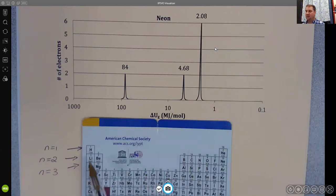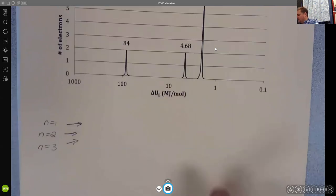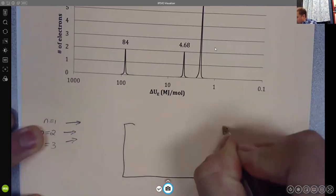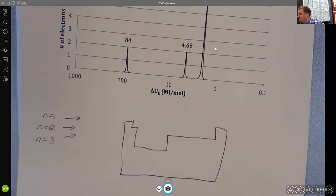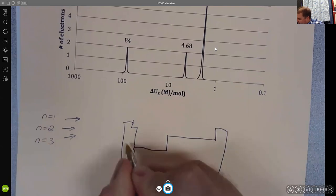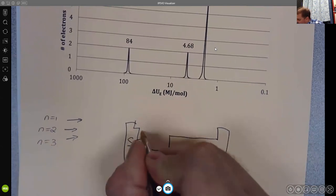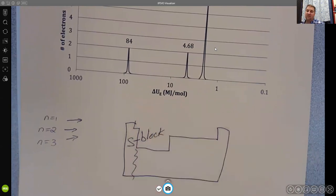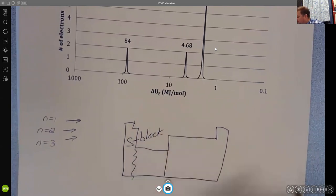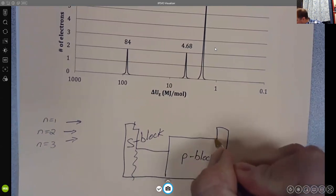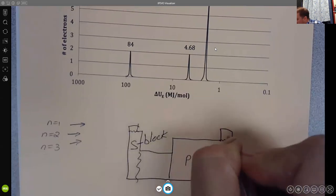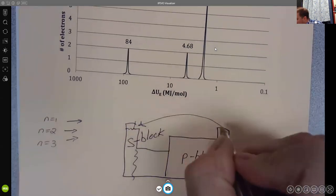And so the second shell for neon has these two electrons here, along with these six electrons here. And what chemists have called this, if I just do a super quick sketch of the periodic table, is this section here is called the S block, and when we talk about those electrons that's what we call those, and this section over here is called the P block. And the helium and the hydrogen, those are really both part of the S block.